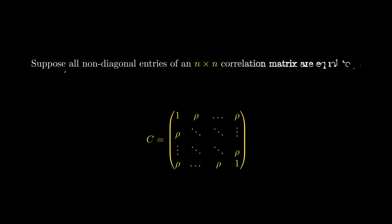Suppose that all non-diagonal entries of an n by n correlation matrix are equal to some value rho. What are the upper and lower bounds for possible values of rho?